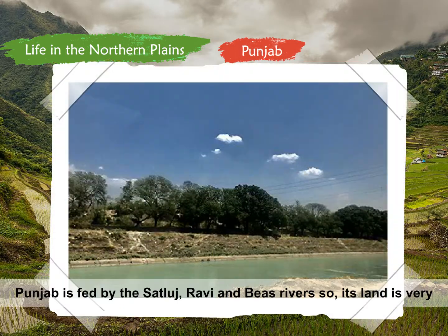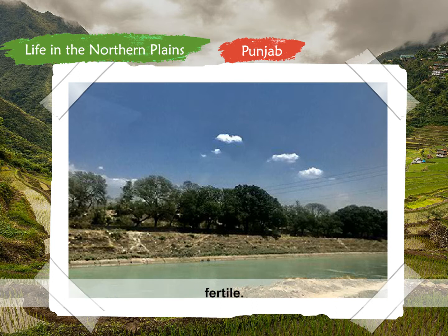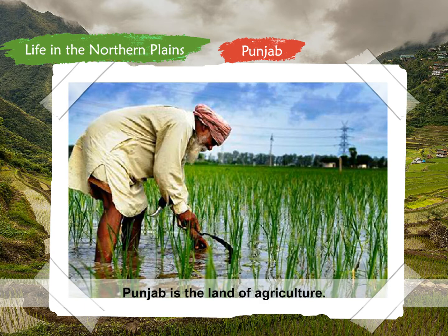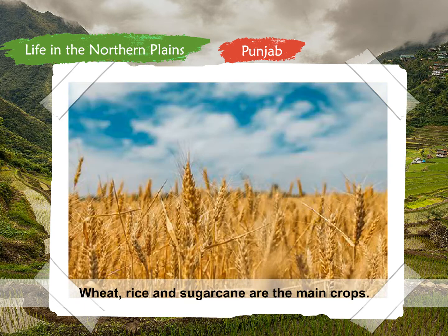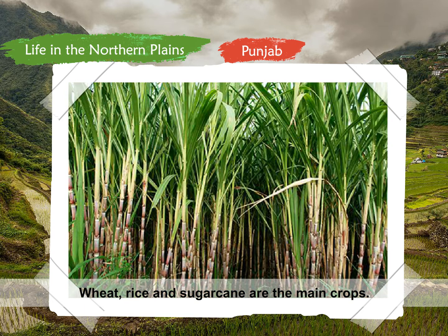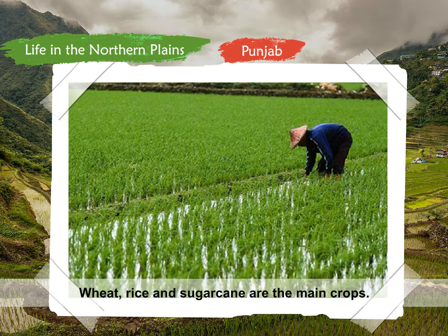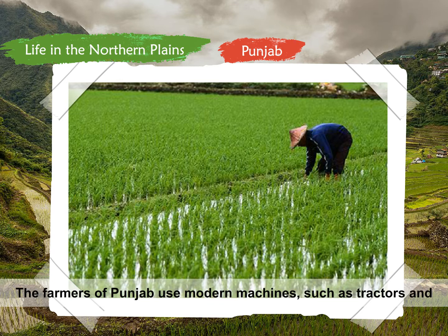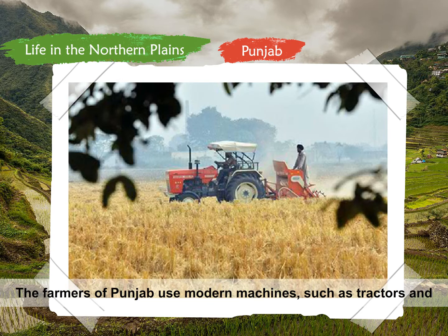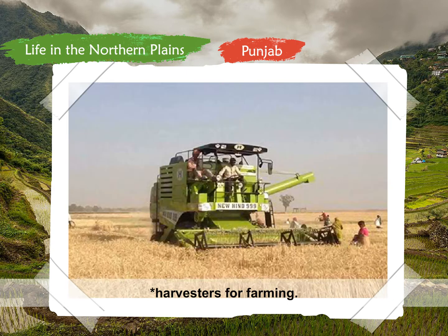Punjab is fed by the Satlaj, Ravi, and Beas rivers, so its land is very fertile. Punjab is the land of agriculture. Wheat, rice, and sugarcane are the main crops. The farmers of Punjab use modern machines such as tractors and harvesters for farming.